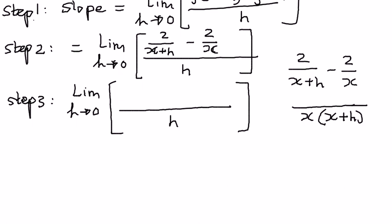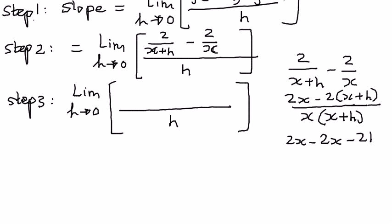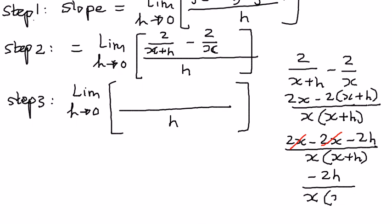So therefore, the numerator of the first fraction I'm going to write as 2 times x, minus the second part written as 2 times x plus h. When I simplify this, it's going to be 2x minus — distributing the negative 2 to every term inside the parentheses — negative 2 times x is negative 2x, and negative 2 times x plus h gives negative 2h, all over x times x plus h. The positive 2x and the negative 2x cancel out, leaving us with negative 2h divided by x times x plus h.